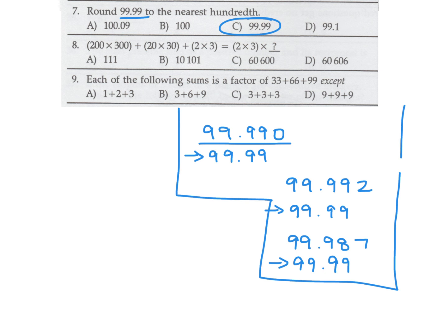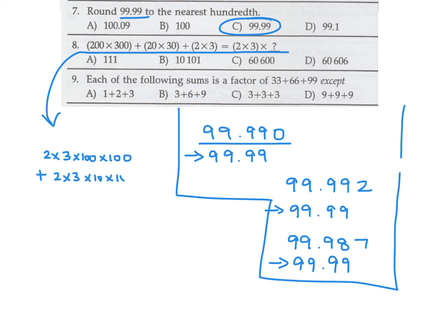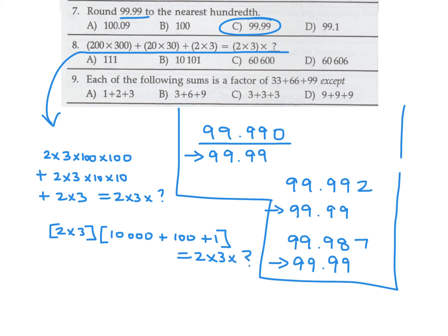200×300 plus 20×30 plus 2×3 equals 2×3 times what? Factor each term: 2×3×100×100 plus 2×3×10×10 plus 2×3. Factor out 2×3 to get 2×3 times (10000 plus 100 plus 1), which equals 2×3 times 10101. So the answer is 10101, and that is B.